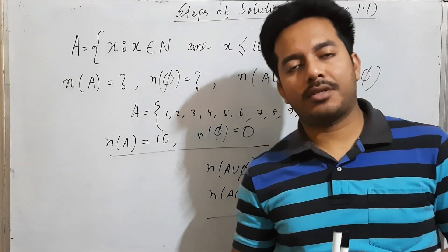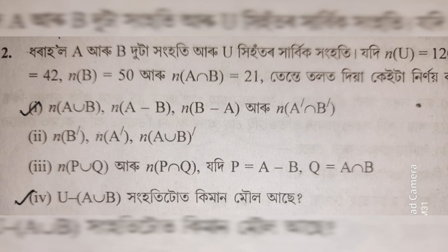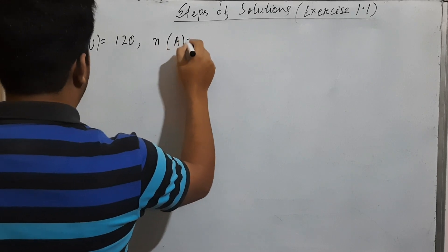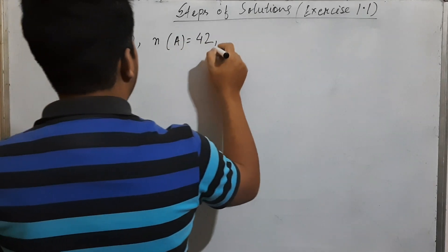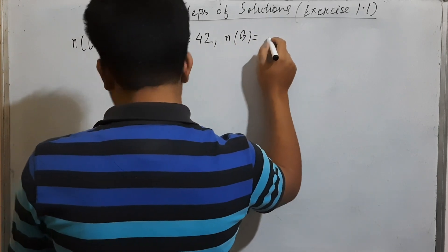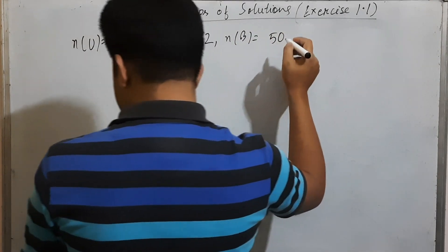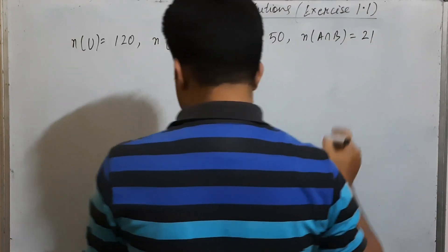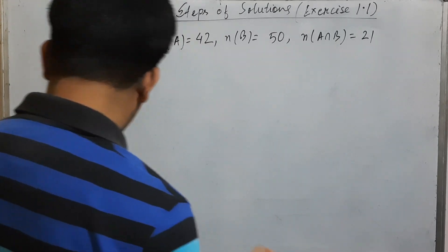Now, what we have to do is answer the question. The question is asking for the answer, which should be written in the data. I will give you an element: n(U) equals 120, n(A) equals 42, n(B) equals 50. I wrote n(A intersection B) to be 21. I will give you an example of the number of A union B.